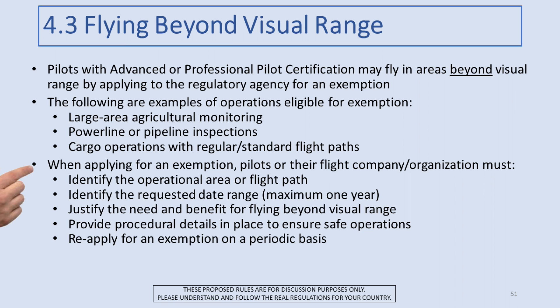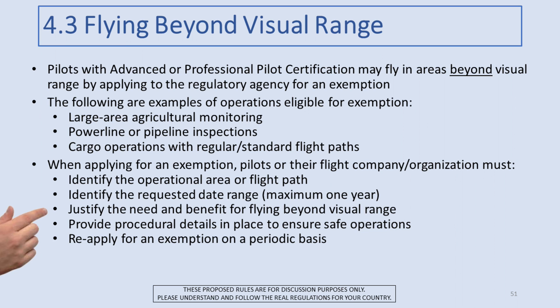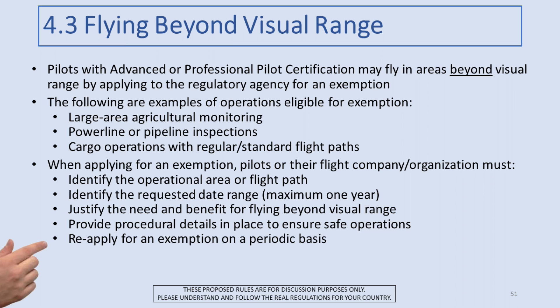When applying for an exemption, the pilot or flight organization must identify the operational area or flight path, identify the requested date range — which could be a full year for an agricultural application or just a couple of weeks for a pipeline inspection — justify the need and benefit for flying beyond visual range, provide procedural details to ensure the operation is safe such as checklists and checking for aircraft. And the exemption must be reapplied for on a periodic basis; it doesn't renew automatically.